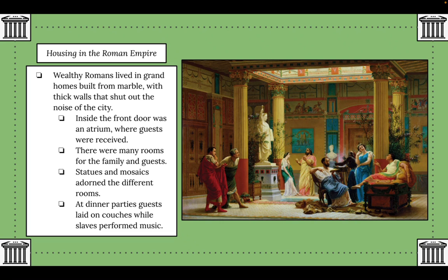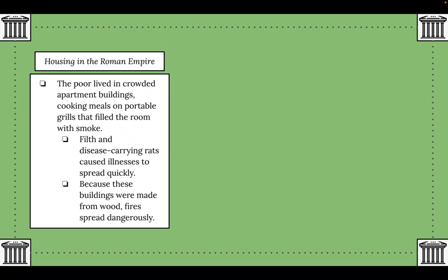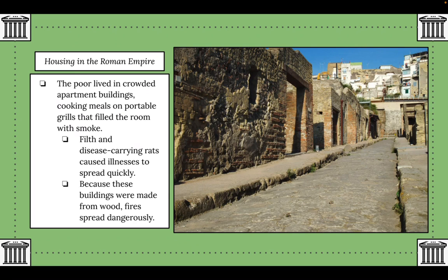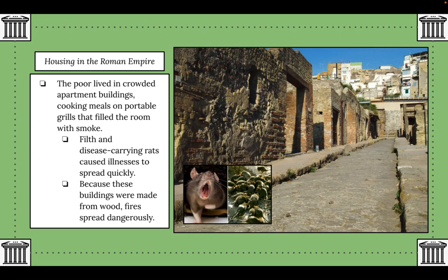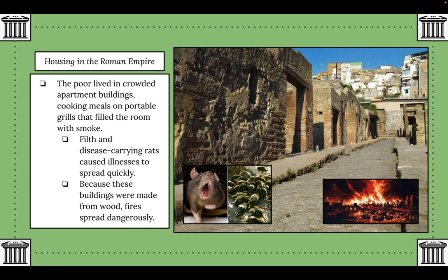At dinner parties, guests would lie on couches while slaves performed music on instruments like the lyre and lute. The poor, by contrast, lived in crowded apartment buildings where they cooked meals on portable grills that filled rooms with smoke. Filth and disease-carrying rats caused illnesses to spread quickly, and since many buildings were made from wood, fires would often spread dangerously through poor areas of the city.